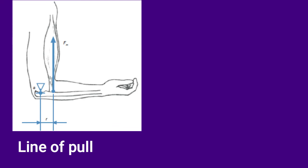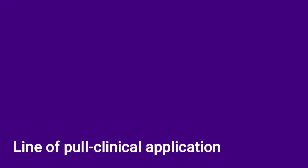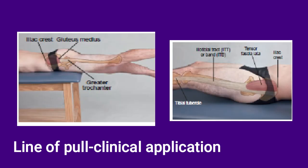But how is line of pull clinically important? Clinically, joint position affects line of pull. As you can see, the biceps produces force by pulling at its attachment — let's call the force FM. R is the distance between the force point by the muscle and the joint axis; this distance is called the moment arm. Force produced by the biceps when the elbow is 90 degrees flexed creates a torque that rotates the forearm into supination. Another example of how joint position affects line of pull can be seen with the tensor fasciae latae and gluteus medius. These are primary hip abductors, but if you flex your hip, their line of pull changes and they can assist in lateral rotation.